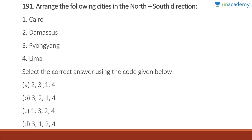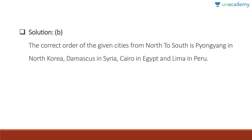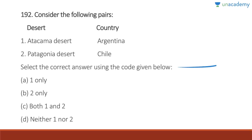Question 191: Arrange the following cities in north-south direction: Pyongyang (capital of North Korea) is northernmost, then Damascus (capital of Syria), then Cairo (capital of Egypt), and finally Lima (Peru) is the southernmost. Answer is 3-2-1-4.